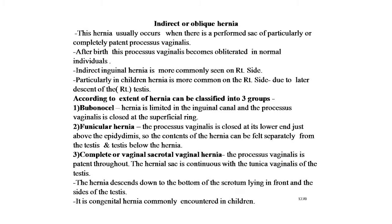Starting with the indirect or oblique inguinal hernia. In indirect inguinal hernia, the content of the abdomen enters the deep inguinal ring and traverses the whole length of the inguinal canal to come out through the superficial inguinal ring. This is much more common than direct inguinal hernia. This hernia usually occurs when there is a preformed sac, particularly a completely patent processus vaginalis after birth. These processus vaginalis becomes obliterated in normal individuals.